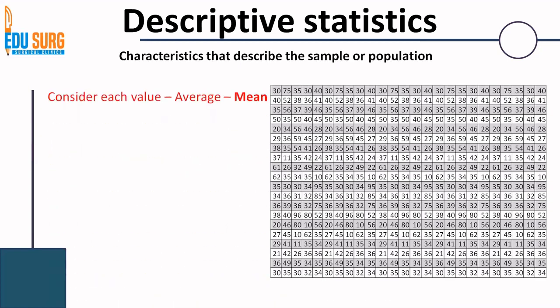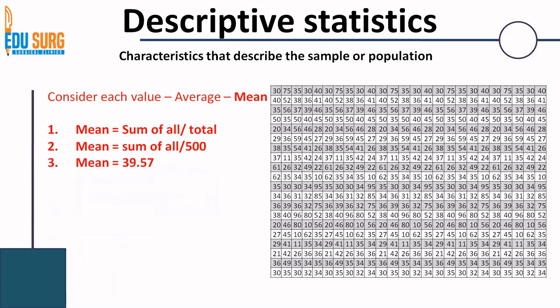To consider each value as an important parameter and calculate the average to describe the center of the data, that is the mean — sum of all divided by total, that is sum of all divided by 500. Using Excel to do this calculation, the mean comes to 39.57. The mean is different from the median in this data. Mode is the most commonly occurring value — here the most commonly occurring value is 35. I used Excel to do these calculations, very easy to do in Excel. So mean, median, and mode are all three different in this dataset.